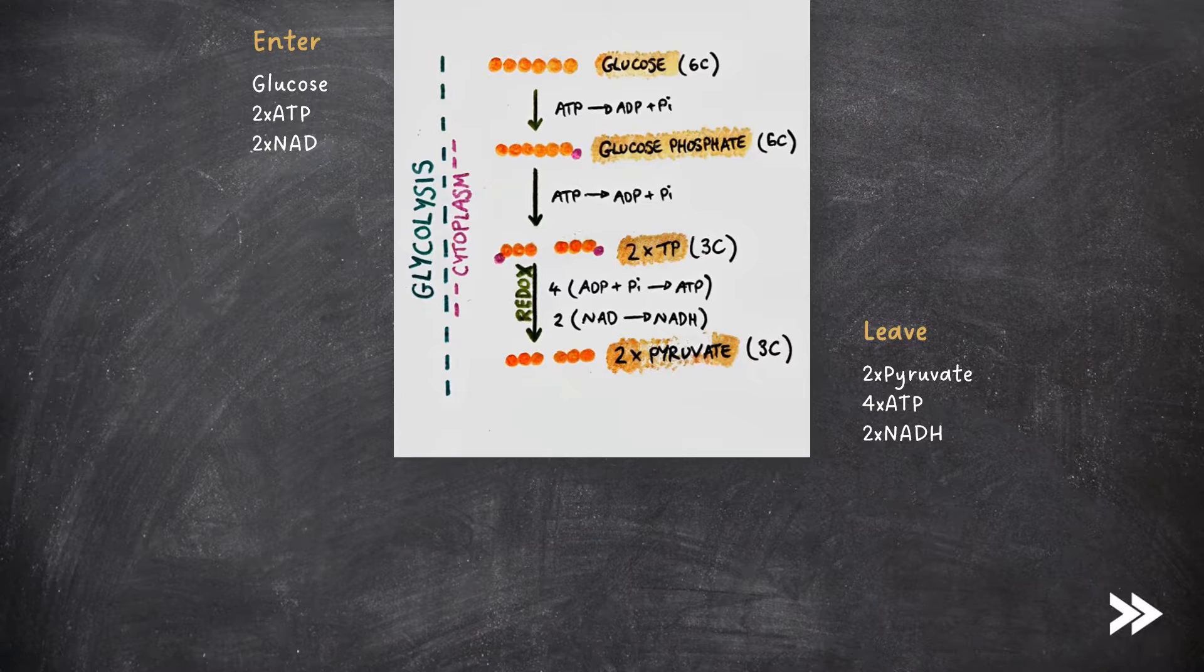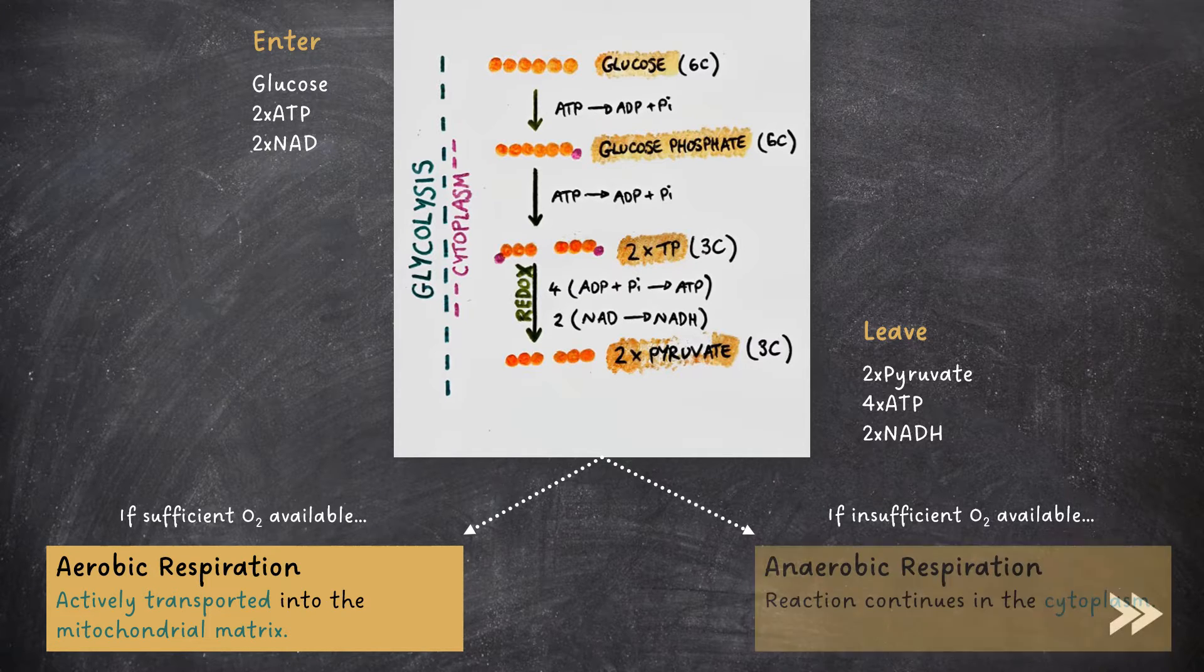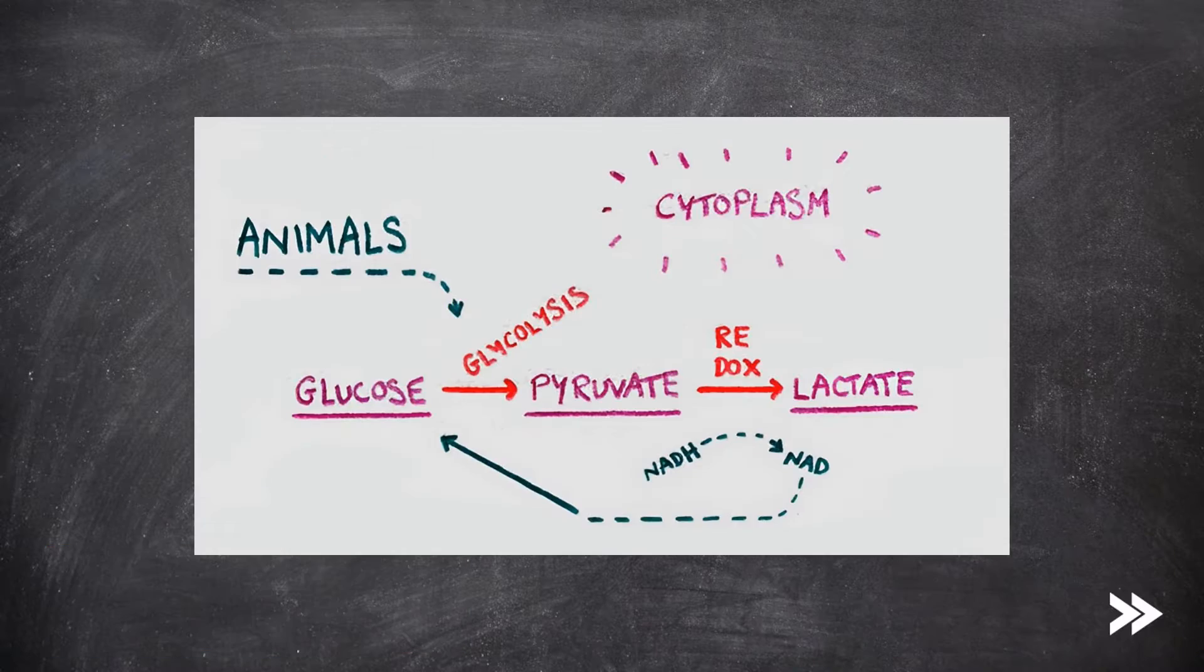So, what happens next? Well, if we have sufficient oxygen, the pyruvate molecules are actively transported into the matrix of mitochondria for aerobic respiration. If insufficient oxygen is available, we have anaerobic respiration, and the reaction will continue in the cytoplasm. So, let's start off with anaerobic respiration. These stages all take place in the cytoplasm of cells.